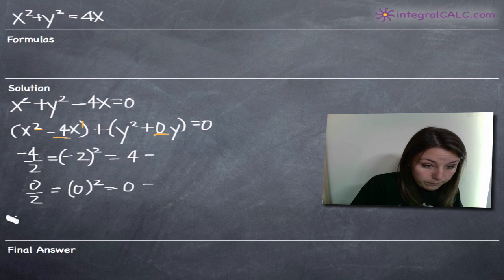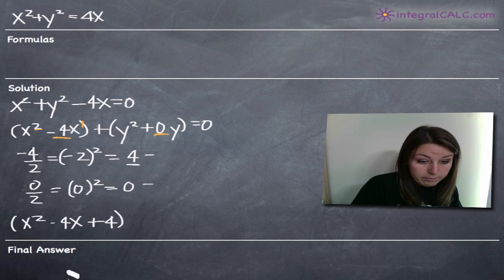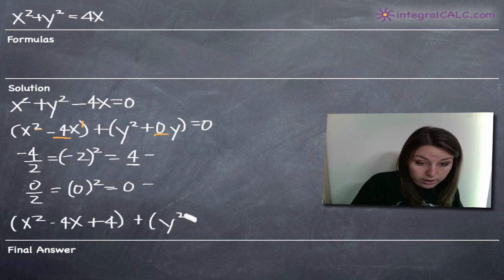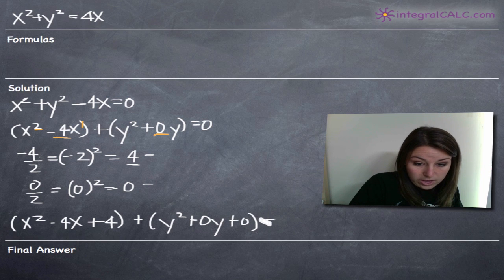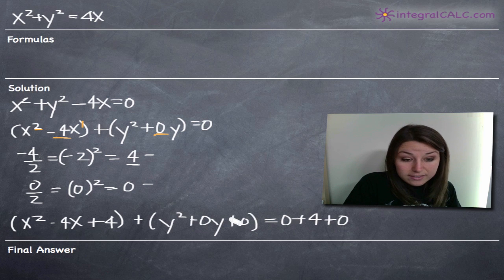Now we're going to add both 4 and 0 to both sides of our equation. So we're going to get x squared minus 4x, and then we said we were going to add 4 to complete the square in terms of x, so plus 4. We'll also need to add plus 4 to the right-hand side. Anyway, plus 4, and then the y terms: y squared plus 0y plus 0, and then that's going to be equal to 0, but we added 4 and 0, so we have to add 4 and add 0 to the right-hand side in order to make everything still equal.